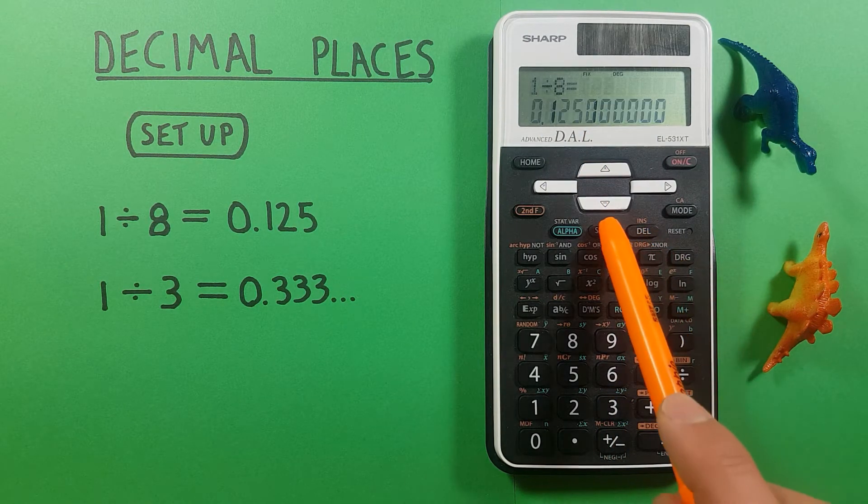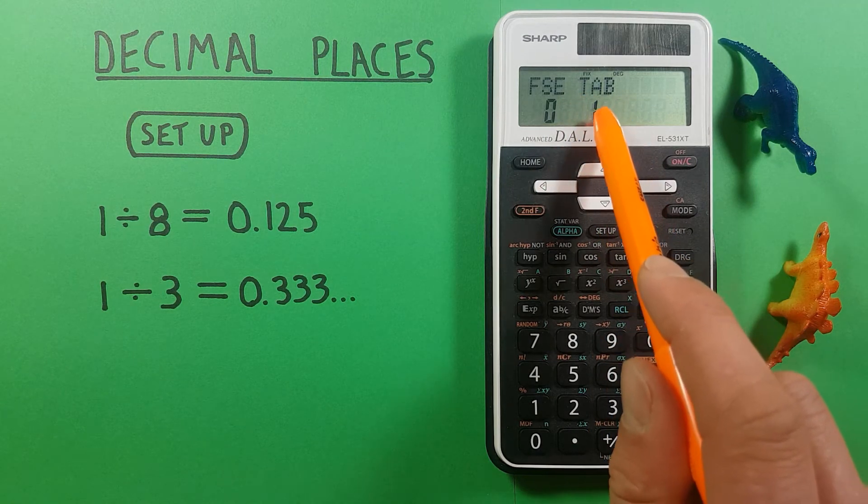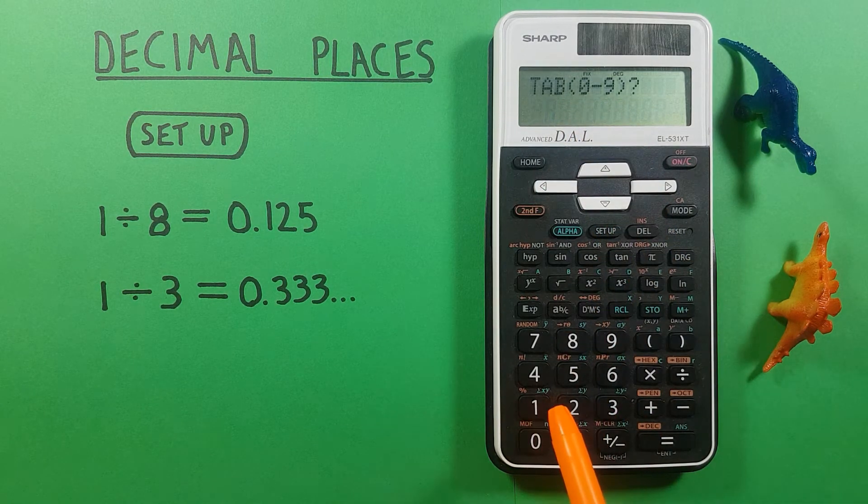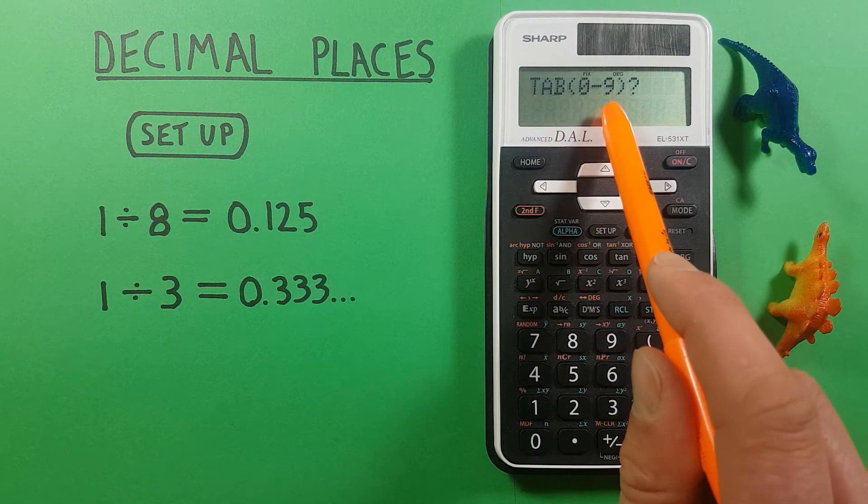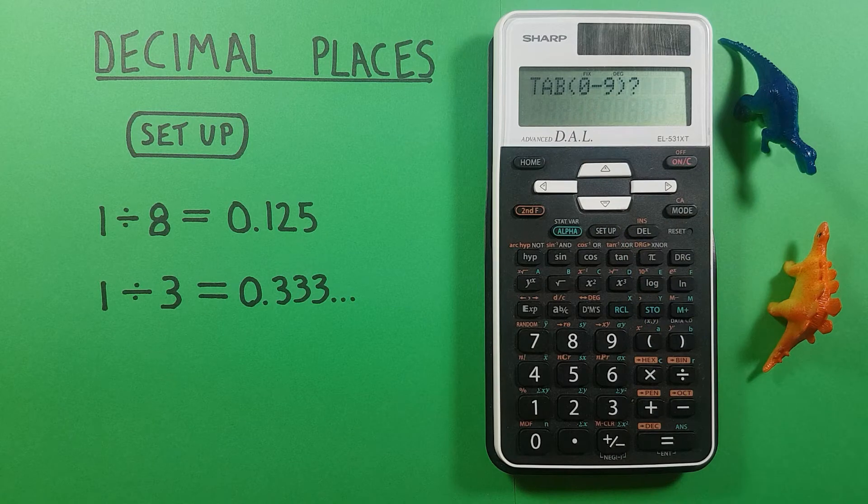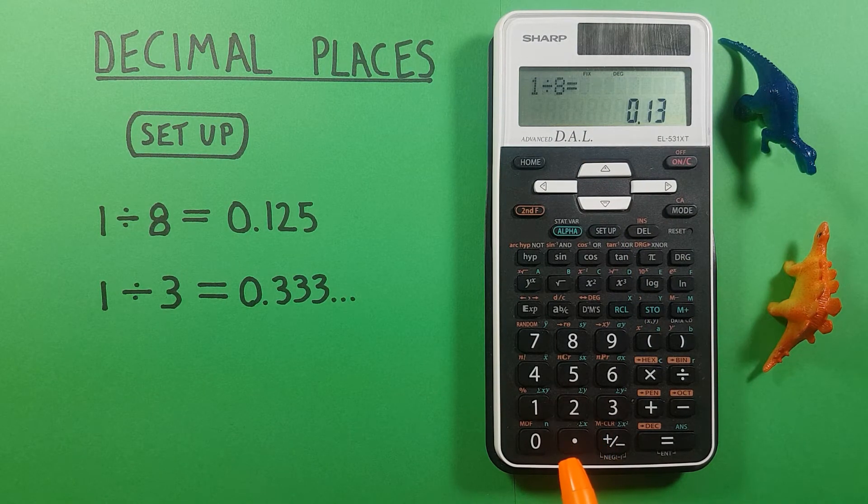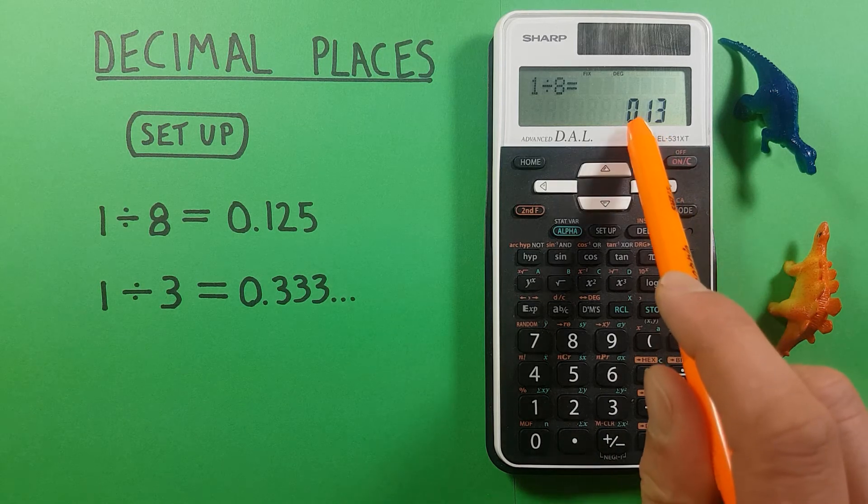Now we go back into setup and you can see we can now select tab and there'll be a 1 there so we press 1 and it'll ask us 0 to 9. This is asking us how many decimal places we want to display.